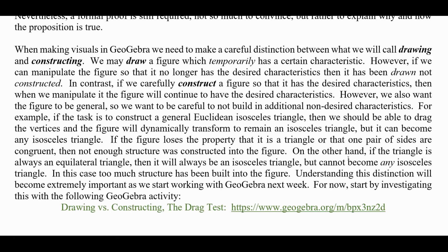As an example I'm going to show you in just a minute: suppose the task is to construct a general Euclidean isosceles triangle. Then what we should be able to do is drag around the vertices, and the figure will dynamically transform in such a way as to remain an isosceles triangle, but it can become any isosceles triangle. If the figure loses the property that it's a triangle, or that one pair of sides are not congruent, then not enough structure was constructed into the figure. On the other hand, if the triangle is always equilateral — which is technically isosceles — then it cannot become any isosceles triangle and too much structure has been built in. You have to hit that sweet spot: put in everything you want, but not extra.